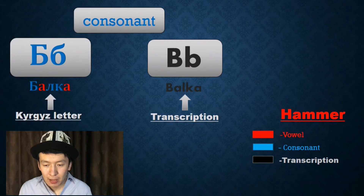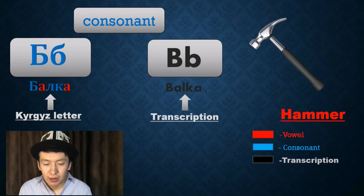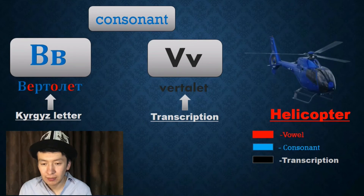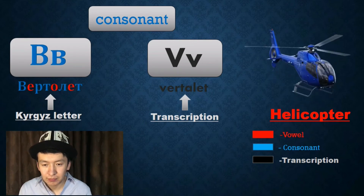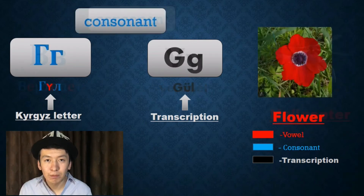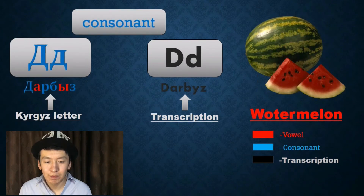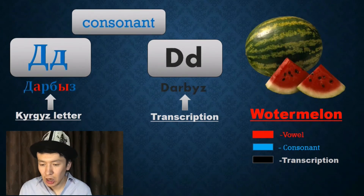B — Balqa. V — Vertolet, Helicopter. G — Gül, Flower. D — Darbız, Watermelon.